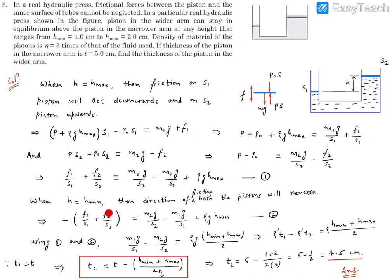Using equations 1 and 2, if we add them, the friction terms cancel out. The sum gives: 2(M1G/S1 − M2G/S2) = ρg(H_min + H_max). Dividing by 2: M1G/S1 − M2G/S2 = ρg(H_min + H_max)/2.